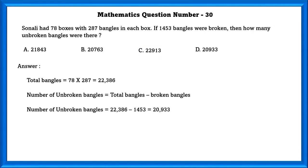Mathematics question number 30. Nali had 78 boxes with 287 bangles in each box. If 1453 bangles were broken, then how many unbroken bangles were there? Total bangles equals 78 × 287, which is equal to 22,386. Number of unbroken bangles equals total bangles minus broken bangles, which is equal to 20,933.